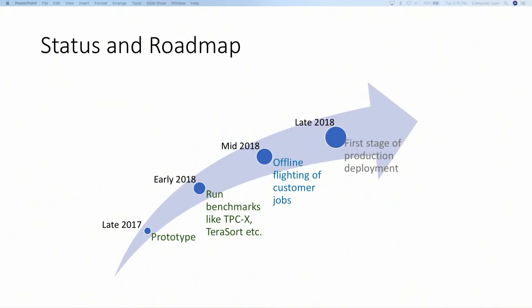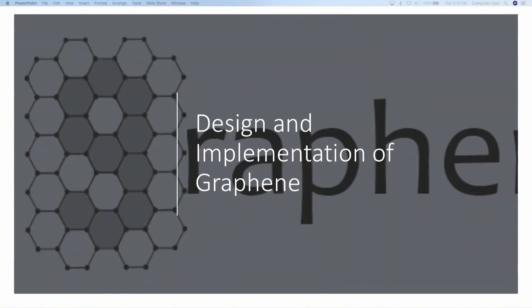These challenges led us to investigate TESH. TESH has common roots with Dryad — the same implementation — and we found a lot of commonalities which made it easy to get started. In late 2017, we did a quick prototype. In 2018 earlier this year, we ran our TPC-H and TPC-DS benchmark jobs and saw comparable performance. Right now we have started offline flighting of our jobs with an initial implementation built on TESH. Late this year, we're hoping to complete the first production deployment of Graphene on our clusters, initially for selective customers where the scale will not be as large.